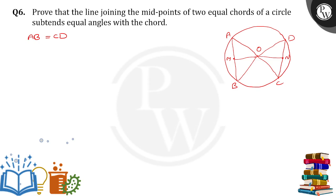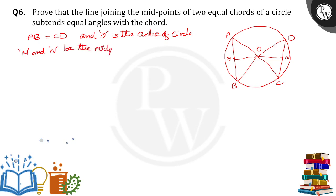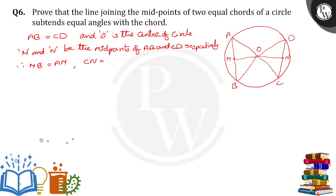Let AB and CD be the equal chords, and O is the center of the circle. Let M and N be the midpoints of AB and CD respectively. Therefore, MB is equal to AM, and CN is equal to ND.